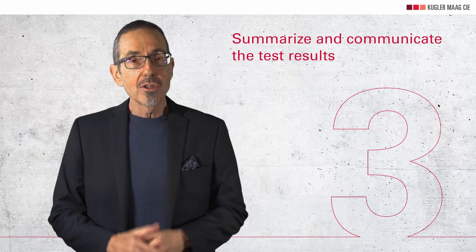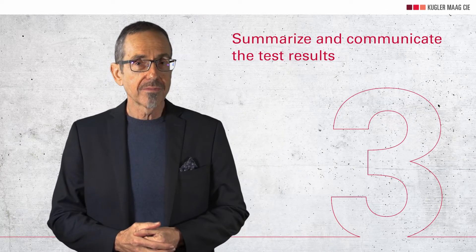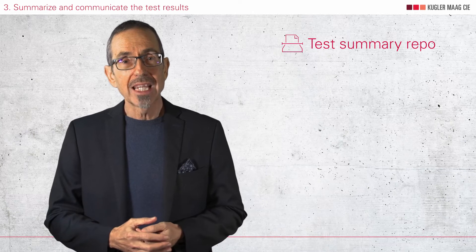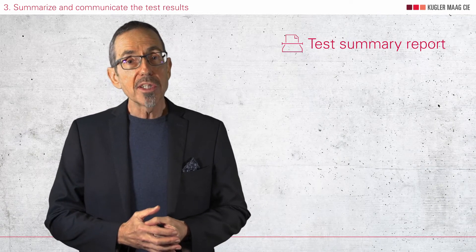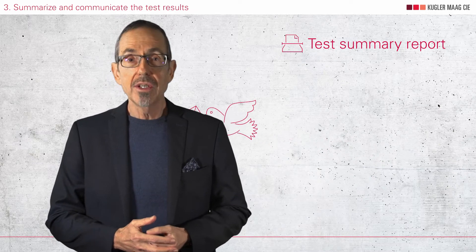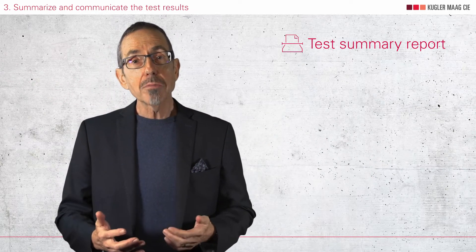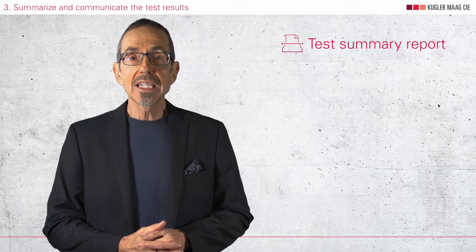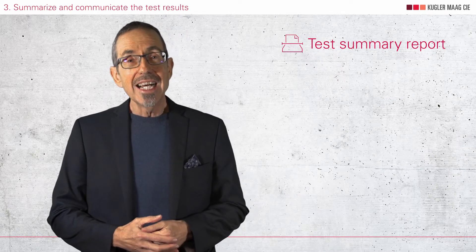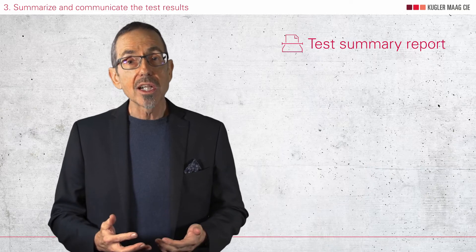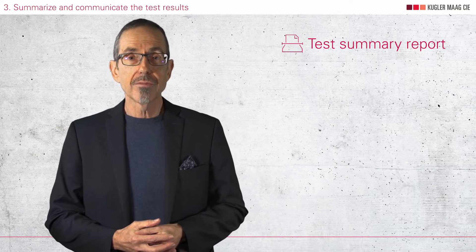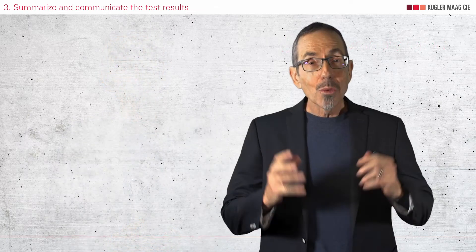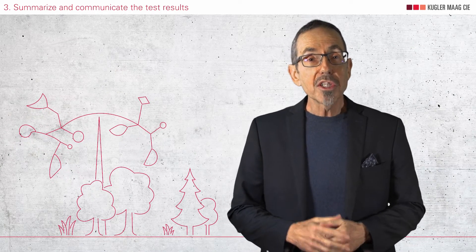Point number three: summarize and communicate the test results. This is usually referred to as a test summary report. This summary report should be sent to the people who need this information, such as the development team, project manager, quality engineers, and so on. The report should summarize the results and hide unnecessary details. The main message it should convey is, of course, compliance with the software architecture.